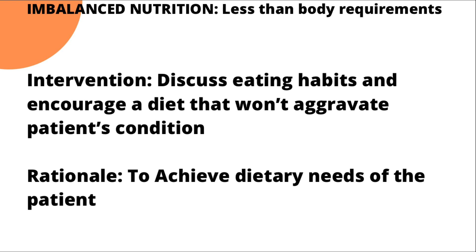The next intervention is to discuss eating habits with the patient. You need to educate them on foods to avoid. If the patient is admitted, encourage them not to have relatives bring in food during visiting hours. Explain which foods they should not eat and why — because certain foods can aggravate blood glucose levels — while also helping the patient gain weight. The rationale is to achieve the dietary needs of the patient.